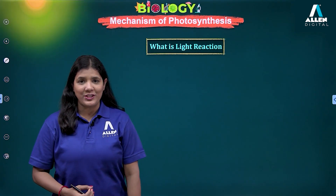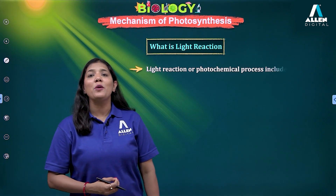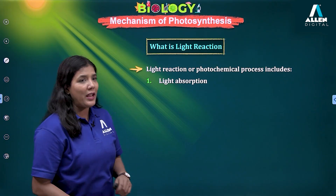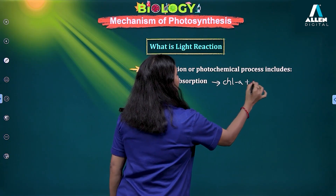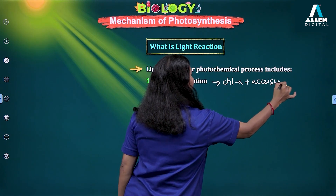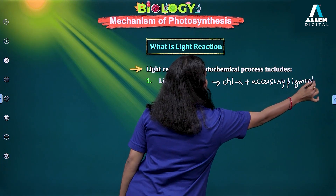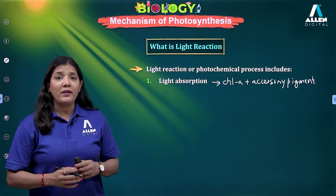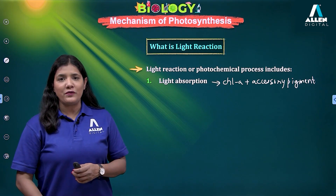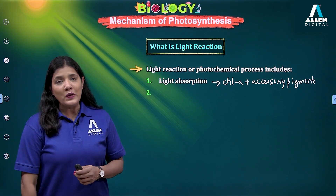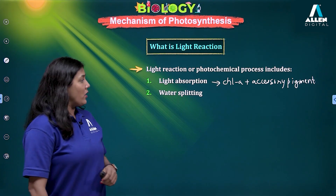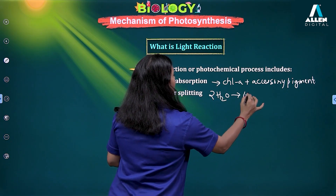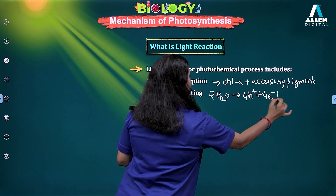So basically, what occurs during the light reaction? There will be absorption of light by the chlorophyll A molecule, and the accessory pigments will be helping here. After this, there will be splitting of water — the water will be broken, which is also called the photolysis of water. Under the presence of sunlight, water will be broken to give us protons, electrons, and oxygen. To get one oxygen molecule, we break two molecules of water into four protons, four electrons, and O2.